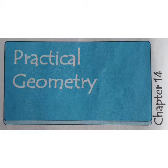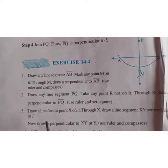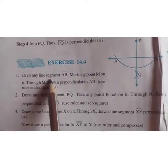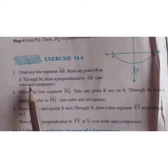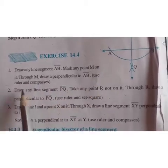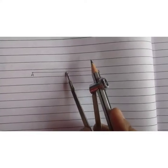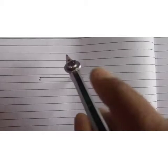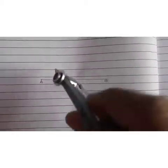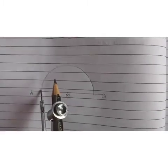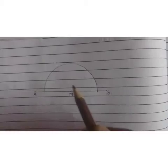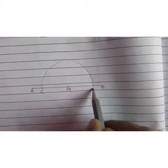Let us start with Exercise 14.4. First question: draw any line segment AB and mark any point M on it. Through M, draw a perpendicular to AB using ruler and compasses. I have drawn a line segment AB and marked a point M on it. Use your compass with M as center and a convenient radius, and cut the line on either sides. Mark these points as C and D.